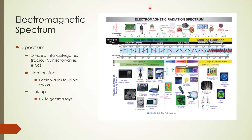We can also split the electromagnetic spectrum into ionizing and non-ionizing portions as shown in the figure. Going from radio, TV, and microwaves all the way to the visible portion, we have non-ionizing radiation. Starting in the UV portion and going to the right, we have ionizing radiation. We shall learn more about this shortly.